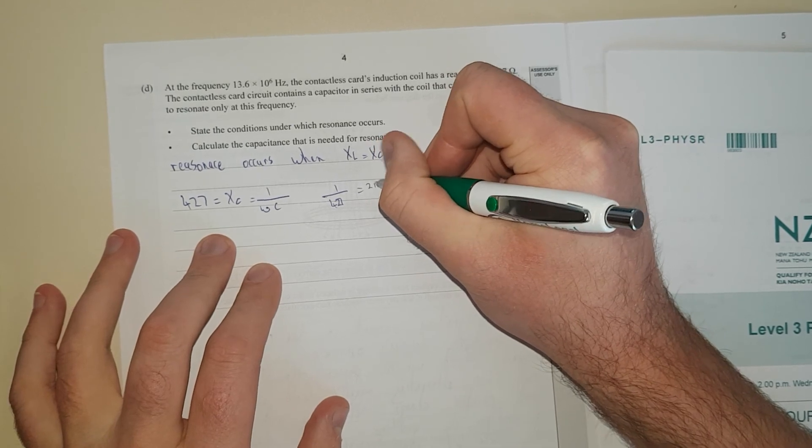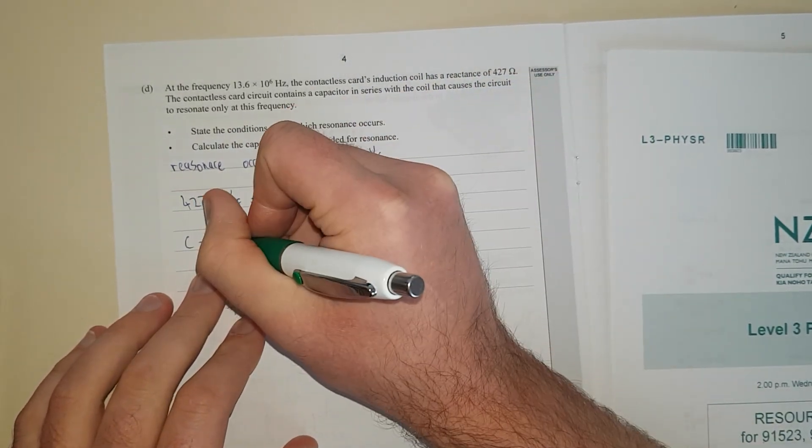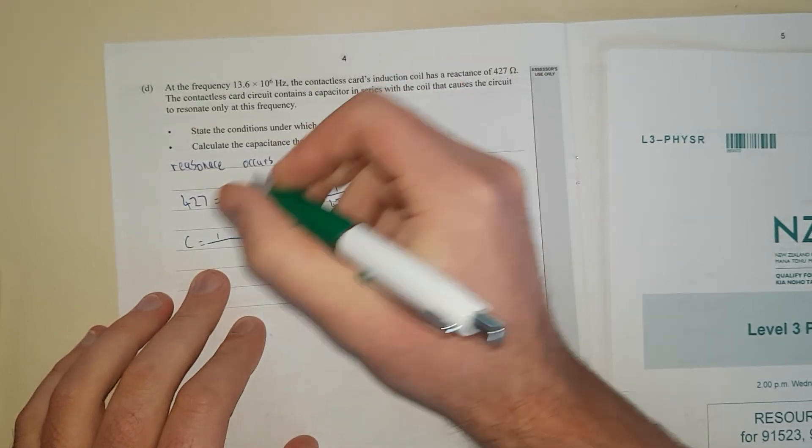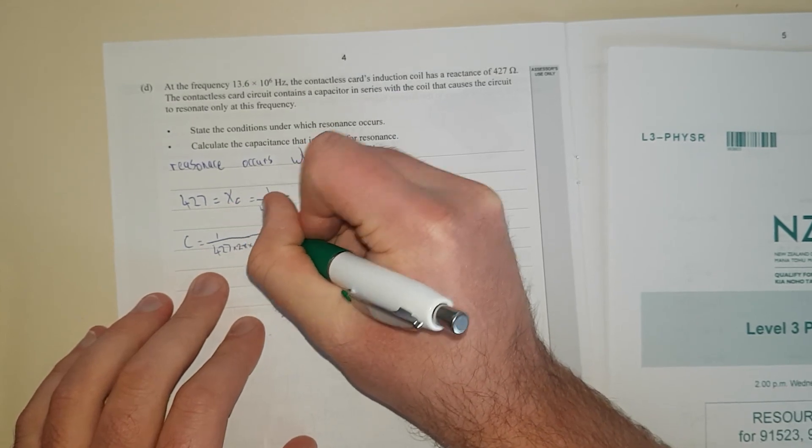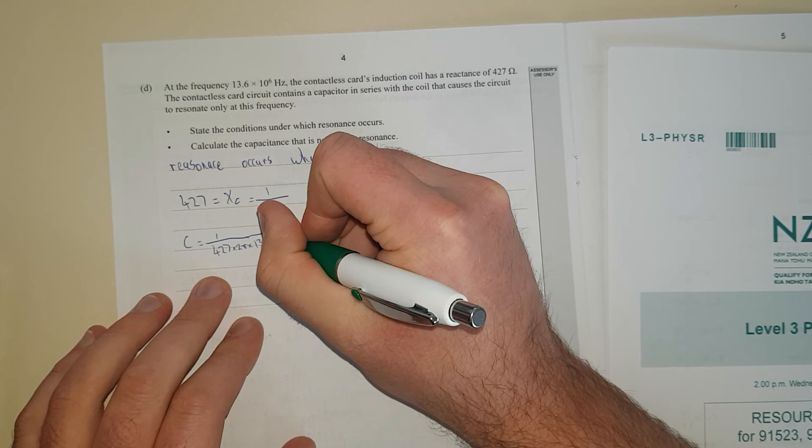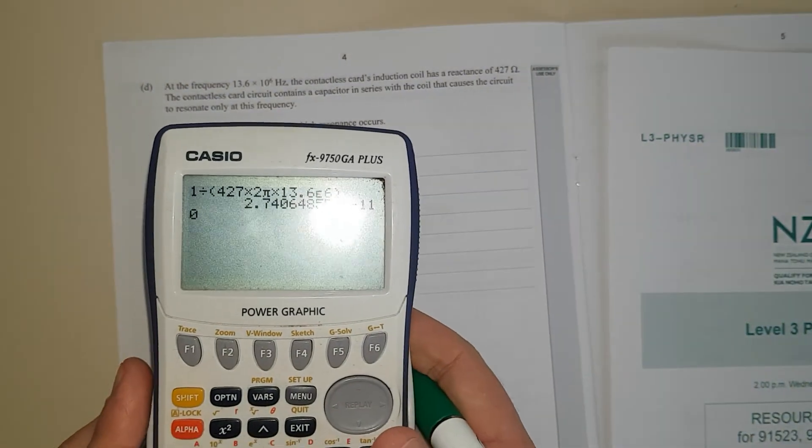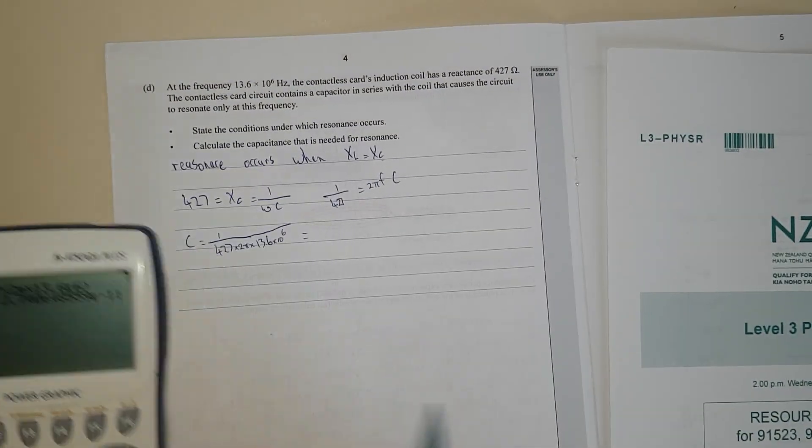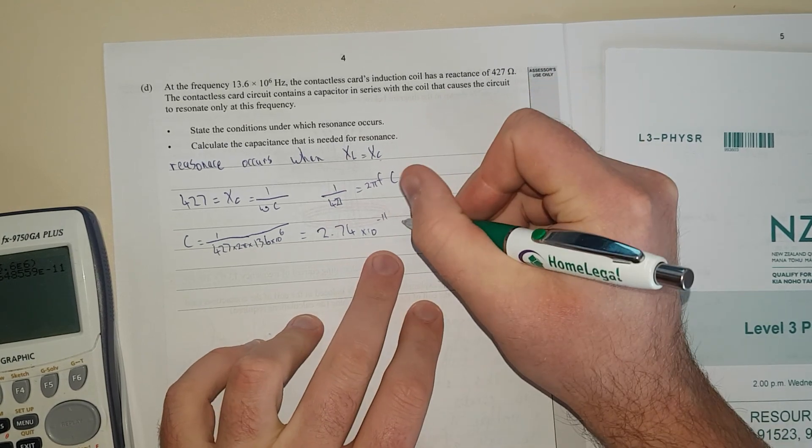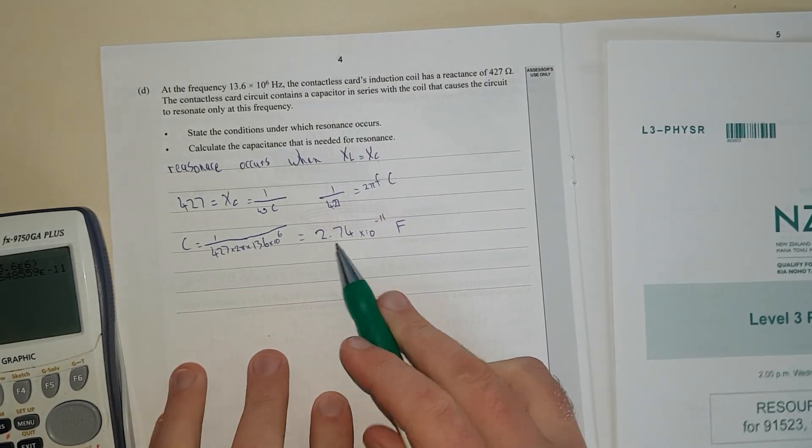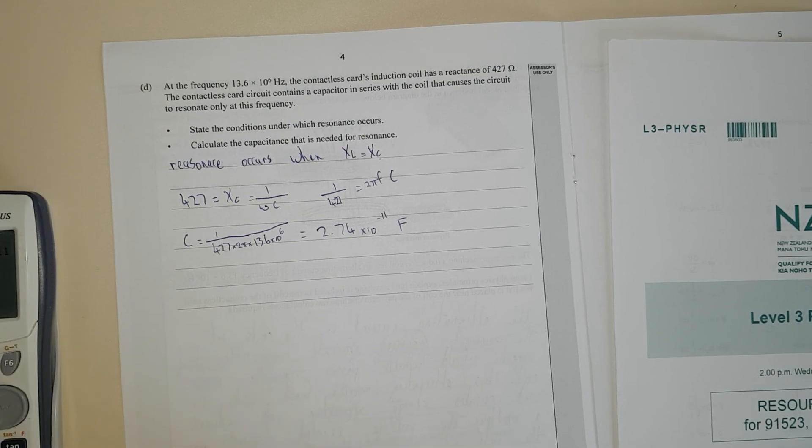And then I have C down here. I'll just divide both sides by 2 pi F. C is equal to 1 over 427 times 2 pi times the frequency, which is 13.6 times 10 to the 6. And then I'll just chuck that into my calculator. And as you can see, I get 2.74 times 10 to the negative 11. 2.74 times 10 to the negative 11. And because it's capacitance, it's in farads. And I've done that for 3 significant figures, because that was 3SF and that was 3SF. I'm pretty lazy with this whole question, actually.